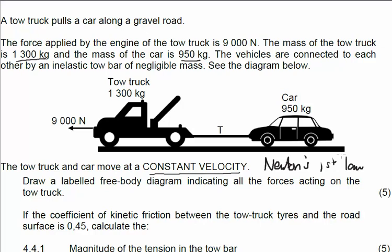The first question says, draw a labelled free body diagram indicating all the forces acting on the tow truck. Now, remember, we basically do two diagrams with this work. The one is the force diagram, where instead of drawing the object, you draw a little block and then show the forces acting on the block. A free body diagram is where we use a dot and just indicate all the forces acting on that dot, none of them pointing towards the dot.